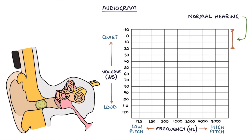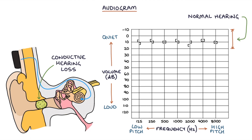In patients with conductive hearing loss, bone conduction readings will be normal between 0 and 20 decibels; however, air conduction readings will be greater than 20 decibels, plotted below the 20 decibel line on the chart. In conductive hearing loss, sound can travel through the bone but is not conducted through air due to pathology along the route into the ear.